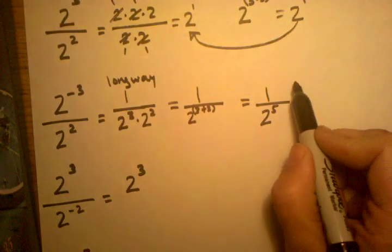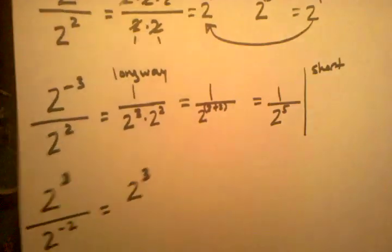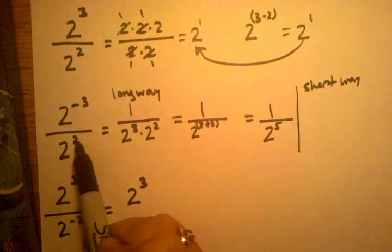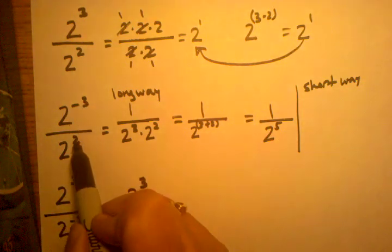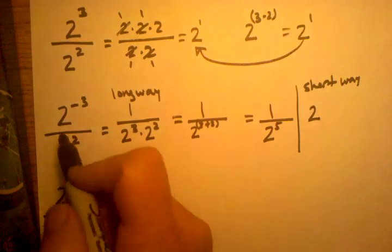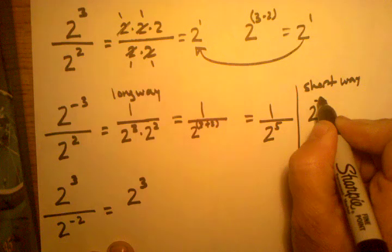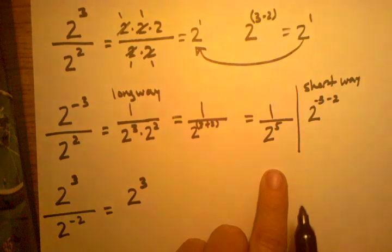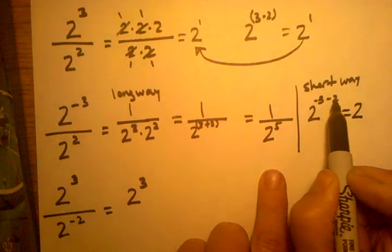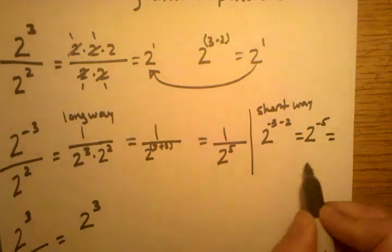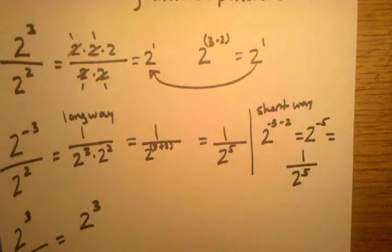On this problem we didn't solve it the short way, so let's do that. The short way with division is just simply subtracting the exponents. We have 2 to the negative third power divided by 2 to the second power. We're going to subtract negative 3 minus 2 and keep the base the same. So starting in the numerator and subtracting the denominator: negative 3 minus 2 equals 2 to the negative 5. And 2 to the negative 5 is the same thing as 1 over 2 to the fifth power. So we did get the same answer both ways.